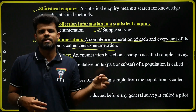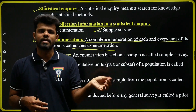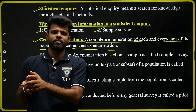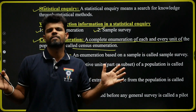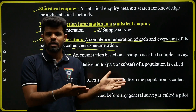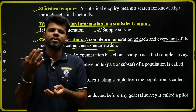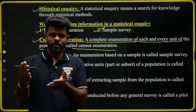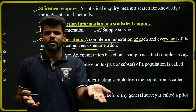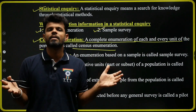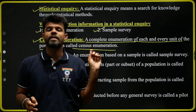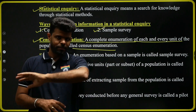In India, once every ten years they conduct a census. They collect all information — how many members are there, how many males, how many females, how many literates, how many illiterates, and what is the income in each particular family. All this information is collected from each and every family throughout India. That is called the census enumeration method.